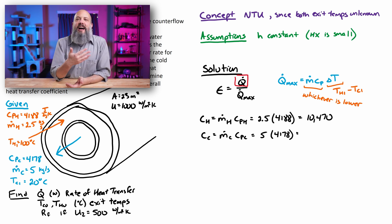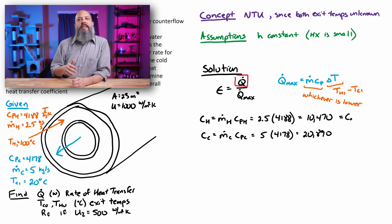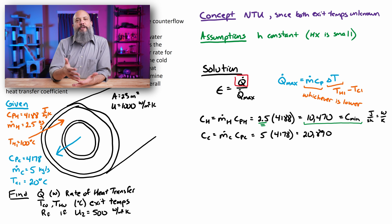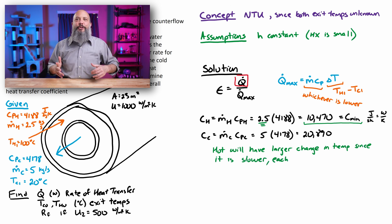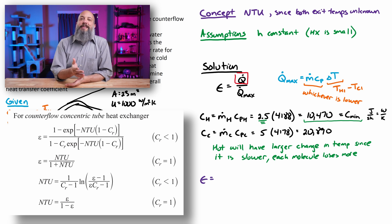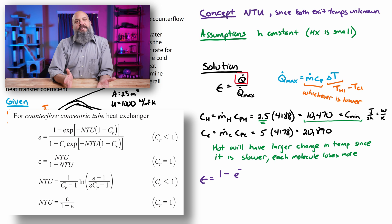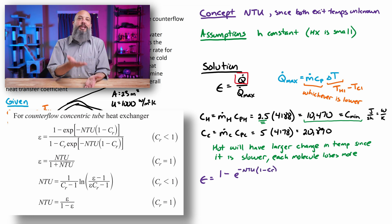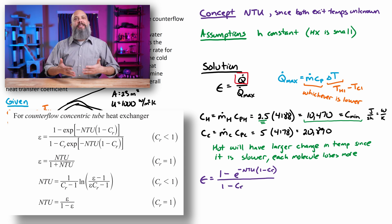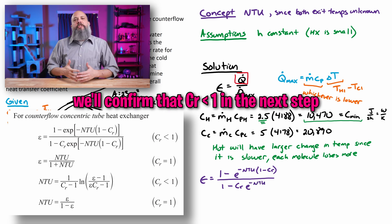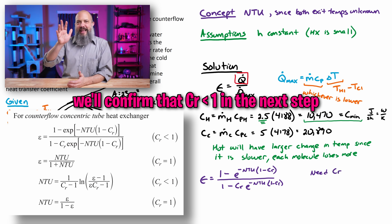For this problem, C_hot is 10,470 and C_cold is 20,890. So C_min is C_hot at 10,470 — the hot fluid will change temperatures faster and is the determining fluid for Q_dot_max. Moving forward, the effectiveness equation for a counterflow heat exchanger — which can be looked up in the FE reference manual — involves two unknowns: NTU (number of transfer units) and CR (the heat capacity ratio).